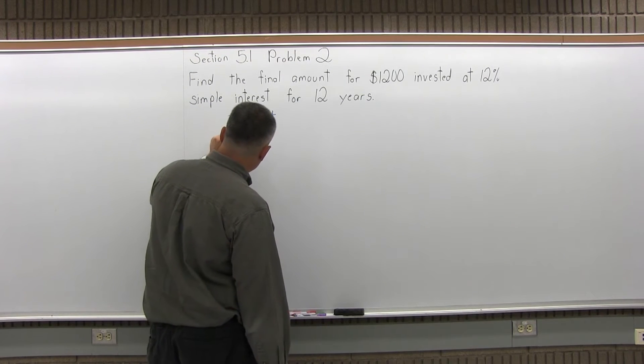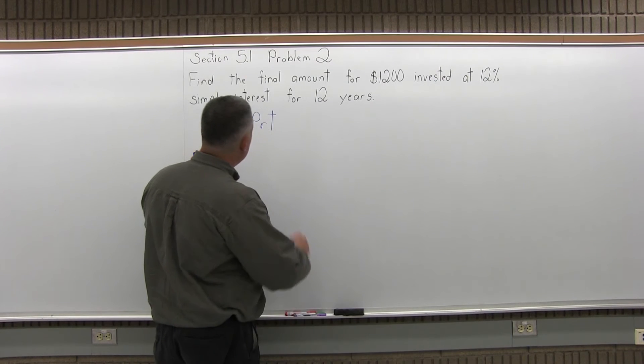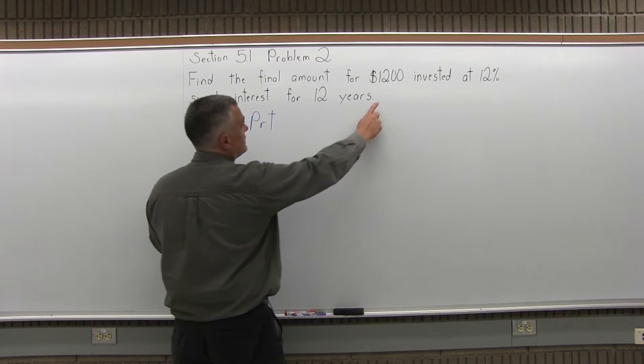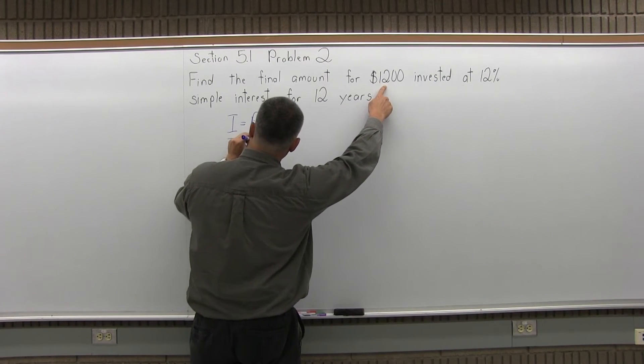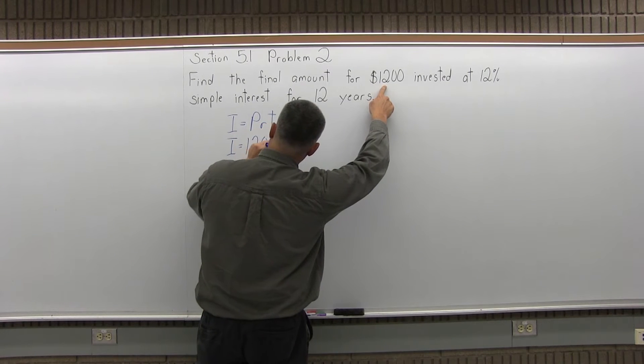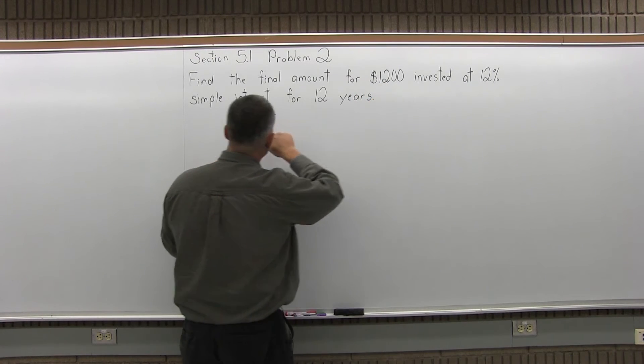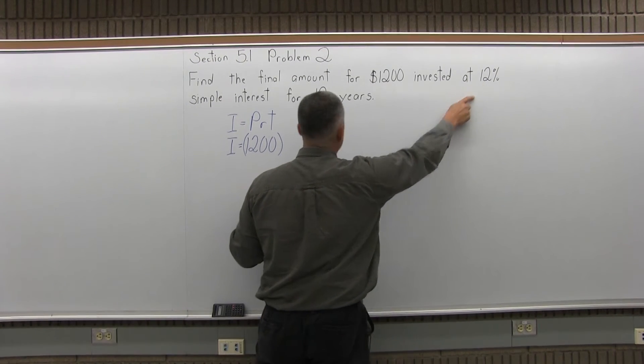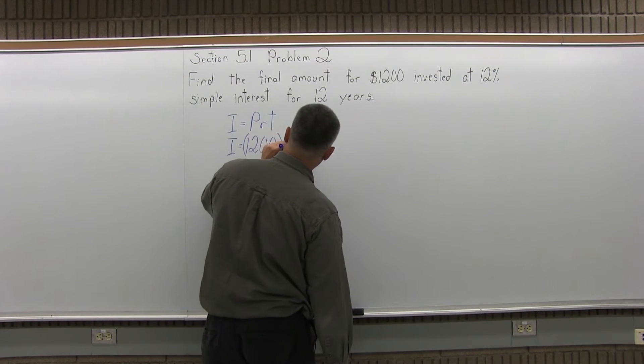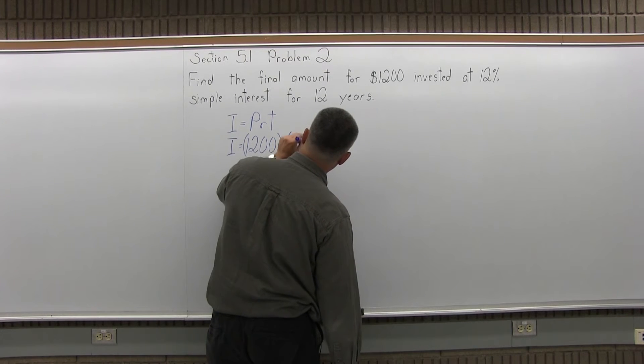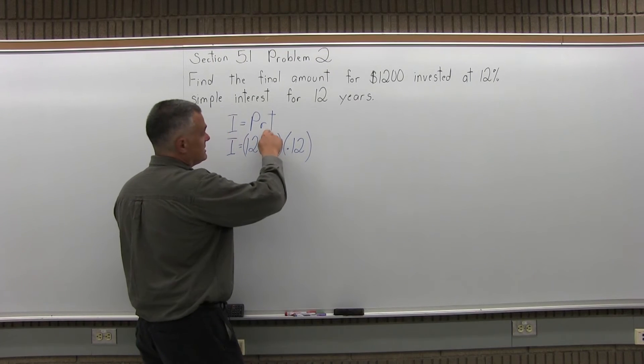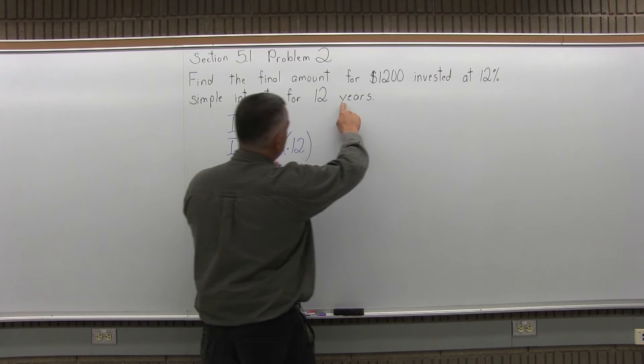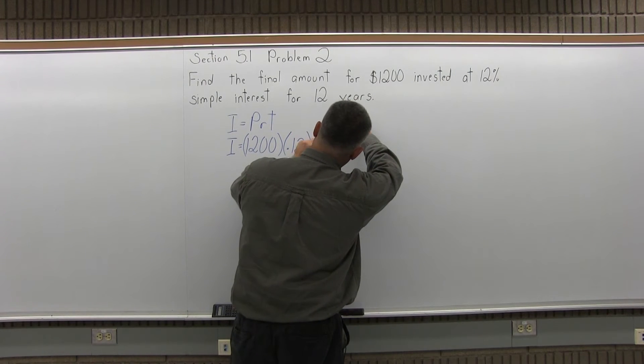I is the interest earned, which is what we're trying to solve for, equals P, the principal or initial amount of the investment is $1,200, times R, which is the rate as a decimal. So the rate is 12%, but as a decimal that would be written .12. And then times T. T is the time in years, so for this problem it's 12 years.